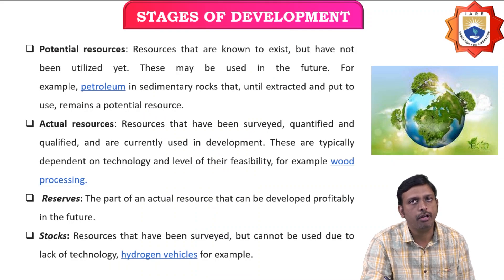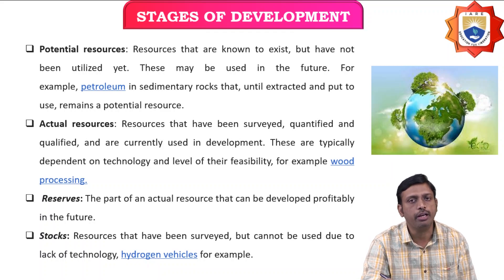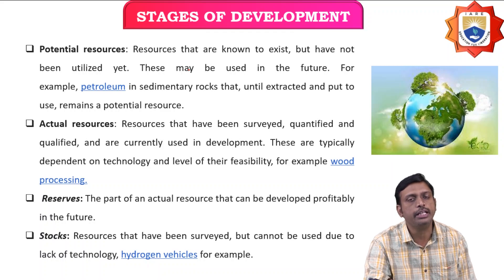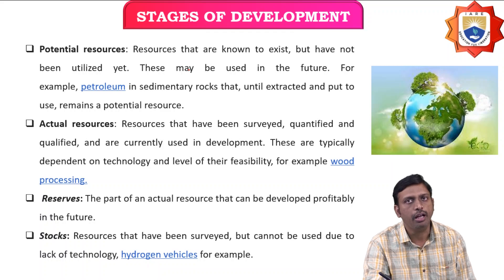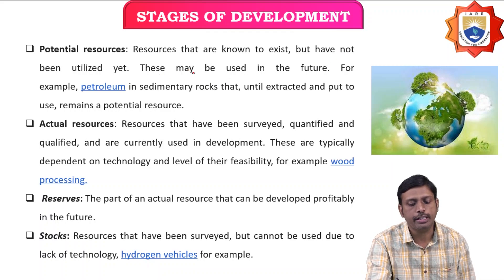There are different stages of development of resources: potential resources, actual resources, reserve, and stocks. Potential resources are known to exist but have not been utilized yet — they may be used in the future. For example, petroleum present in sedimentary rocks, until extracted and put to use, remains a potential resource.